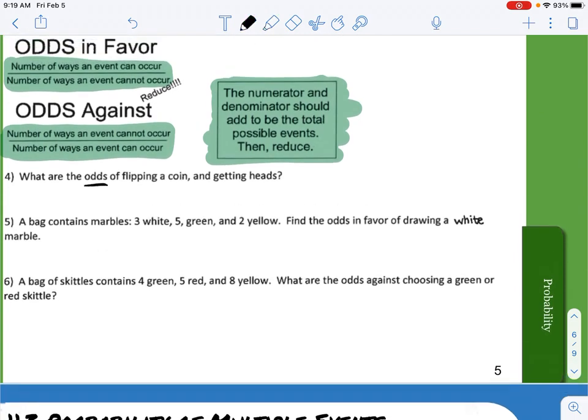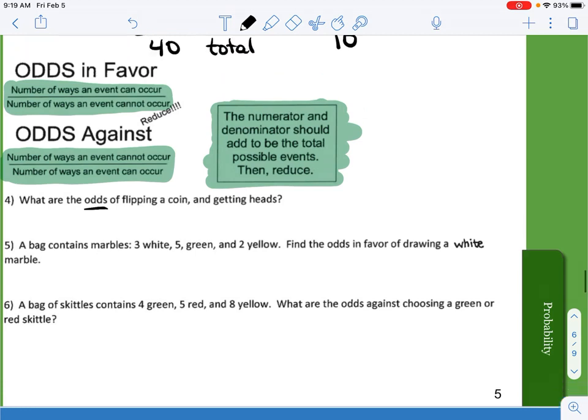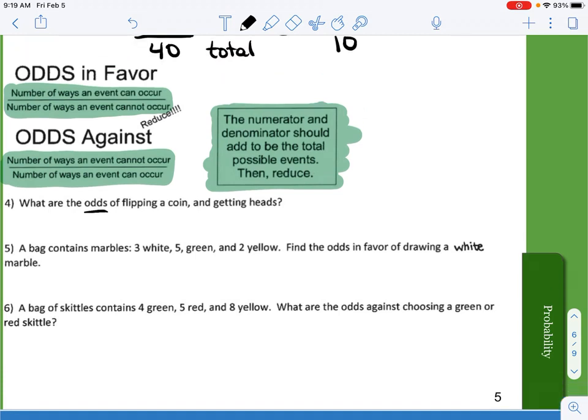So we want to know the odds of flipping a coin and getting heads. So we want the odds for getting a heads. On a coin, you have one head and one tail side. So you have one way you can get a head. That's the number of ways the event can occur over the number of ways it cannot occur. That is one.